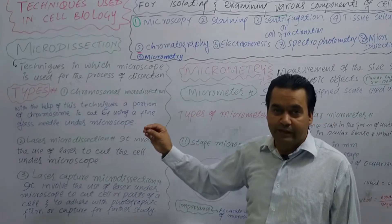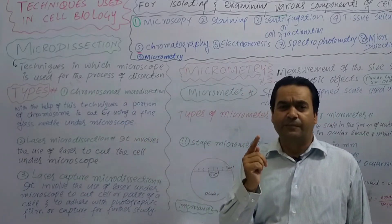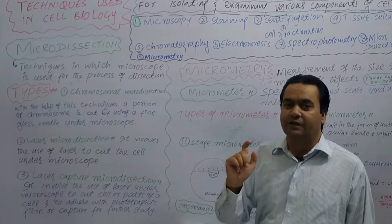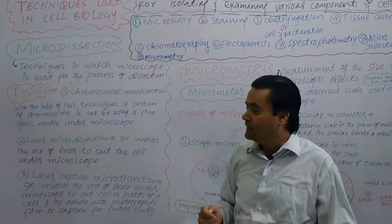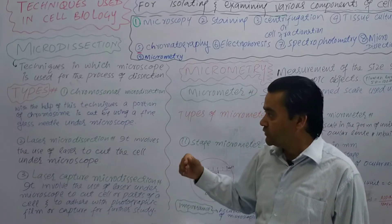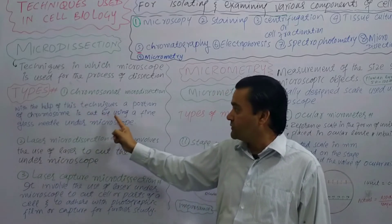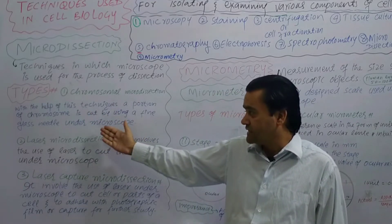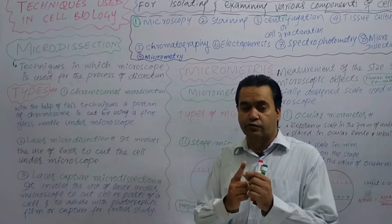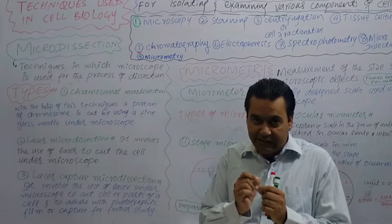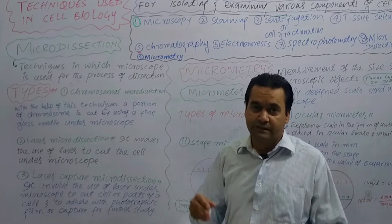The mechanism is to cut with the help of a fine glass needle. With the help of this technique, a portion of chromosome is cut by using a fine glass needle under microscope.